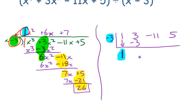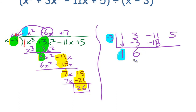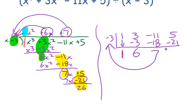Subtract and get 6 — same as in long division. Then 6 times negative 3 is negative 18; write it underneath the negative 11. Those numbers give us 7. Then 7 times negative 3 is negative 21; write it underneath the 5. Subtract, and you get 26 as your remainder — the same result as long division.